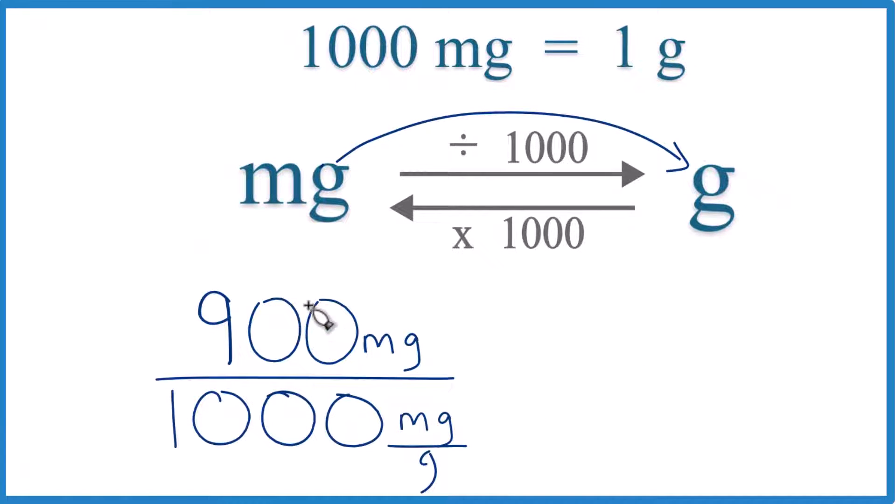So essentially we're just taking 900 divided by 1,000. That'll give us our grams. But look at the units. We have 900 milligrams, we're given that, and then down here in the denominator, 1,000 milligrams per gram. That's our conversion factor.